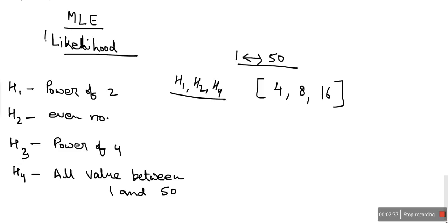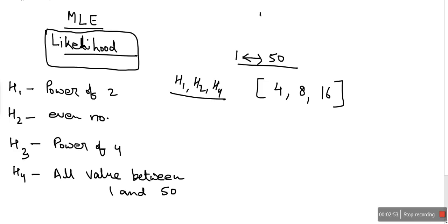We are going to use the concept of likelihood. In simple terms, likelihood is a chance — what are the chances of this data set belonging to h1? It is computed as the multiplication of all the probabilities.